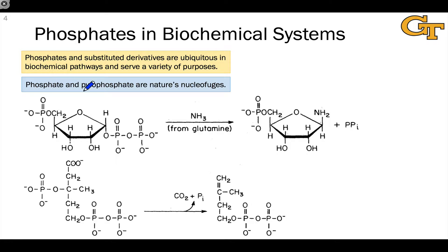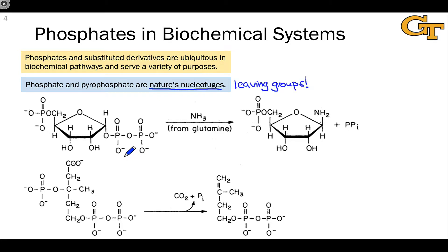The first role we'll see for the phosphate group is as nature's nucleofuge — nature's leaving group. The phosphate, diphosphate, and triphosphate anions are relatively stable, especially when metal cations like Mg2+ are around, and for this reason they can act as leaving groups.